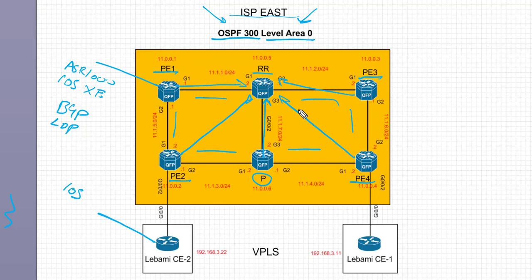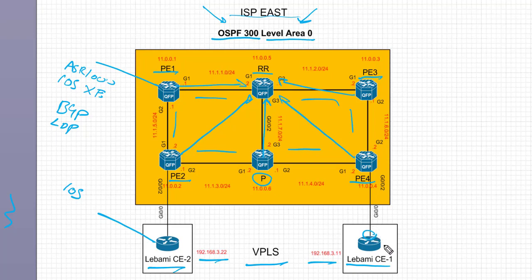Our next task is to look at VPLS, where we have two CE sites — CE1 and CE2 — and we're going to configure BGP auto-discovery for VPLS today. Auto-discovery enables each PE to discover the VPLS domain, tracks PE devices when they are added or removed, and uses BGP to find the PE devices.